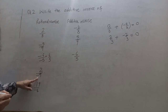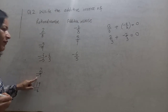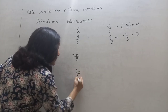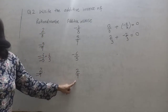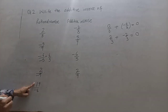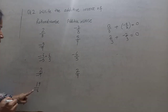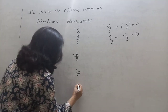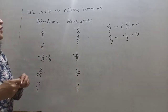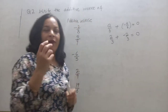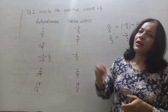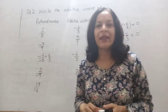Again, 2 upon minus 9 is a negative number, so its inverse will be positive — the same number with opposite sign. The additive inverse of 19 upon 6 will be minus 19 upon 6. So the additive inverse of any rational number is the same number with the opposite sign.